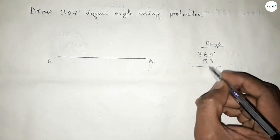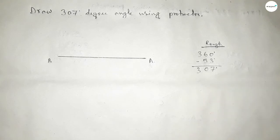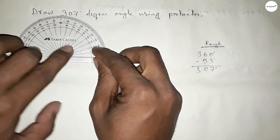So this is 7 carry 1, so 360 minus 53 equals 307 degrees. So first counting 360 degree angle, so putting the protractor on the point B by this way.